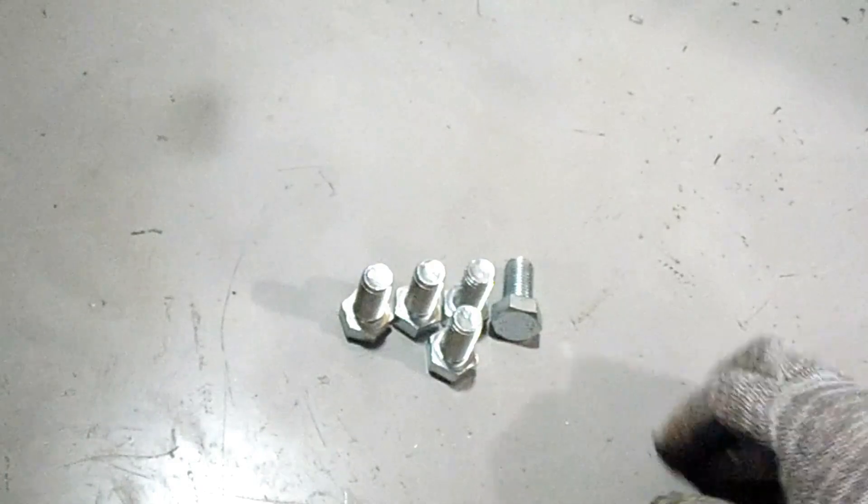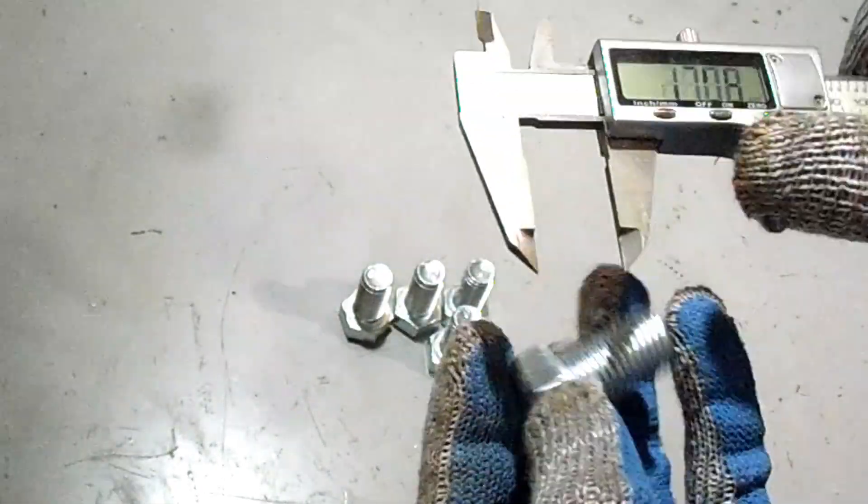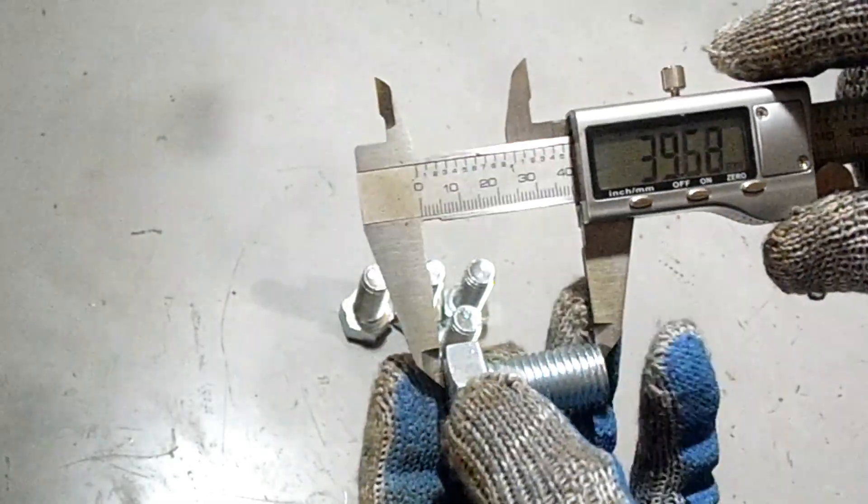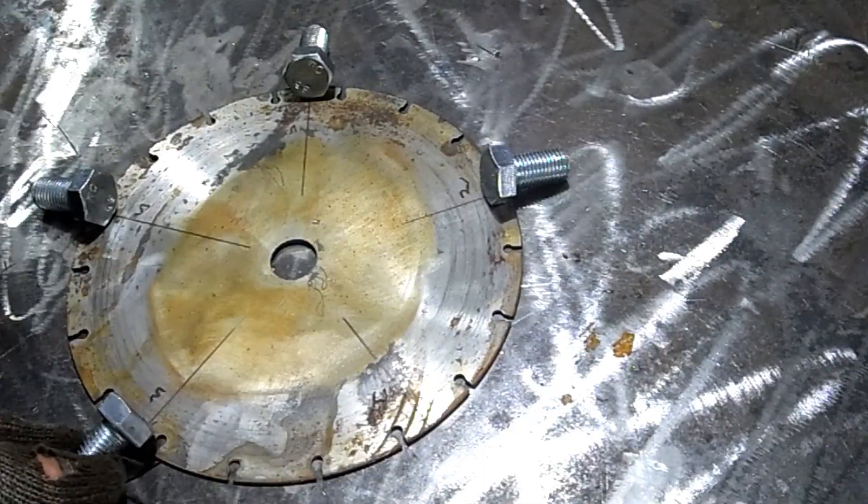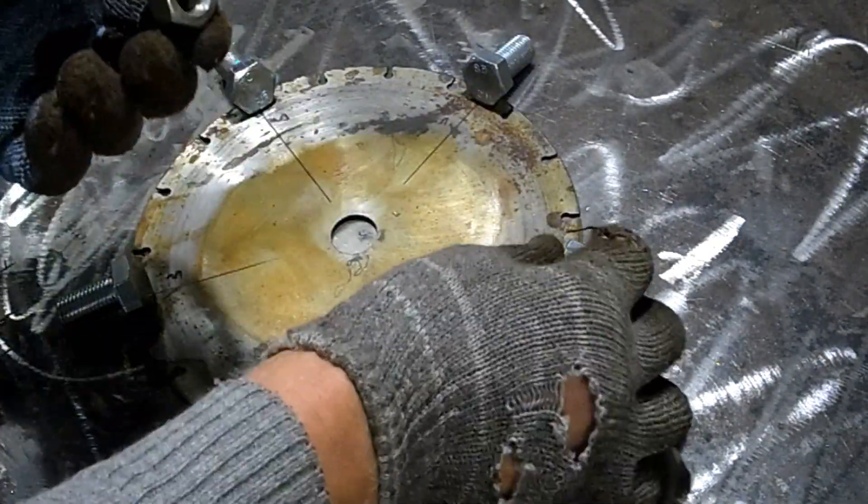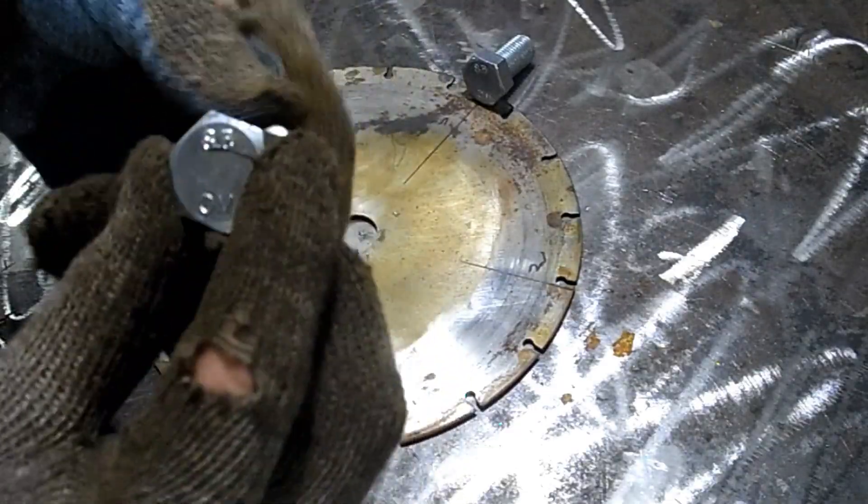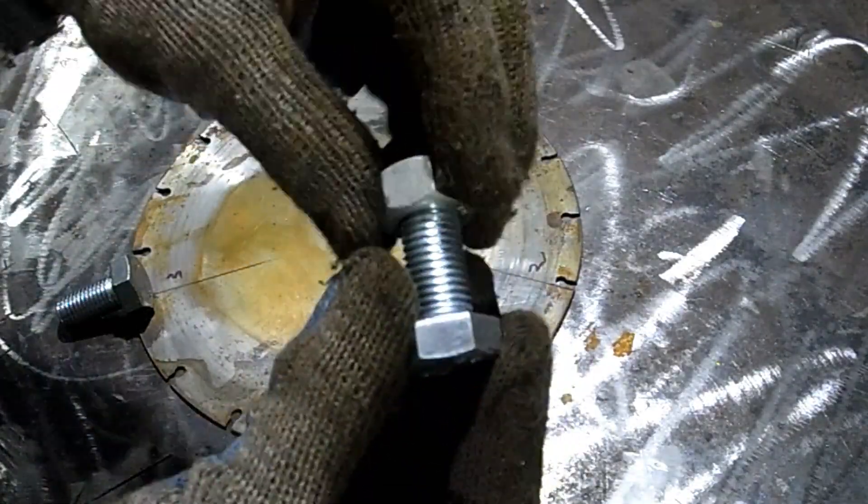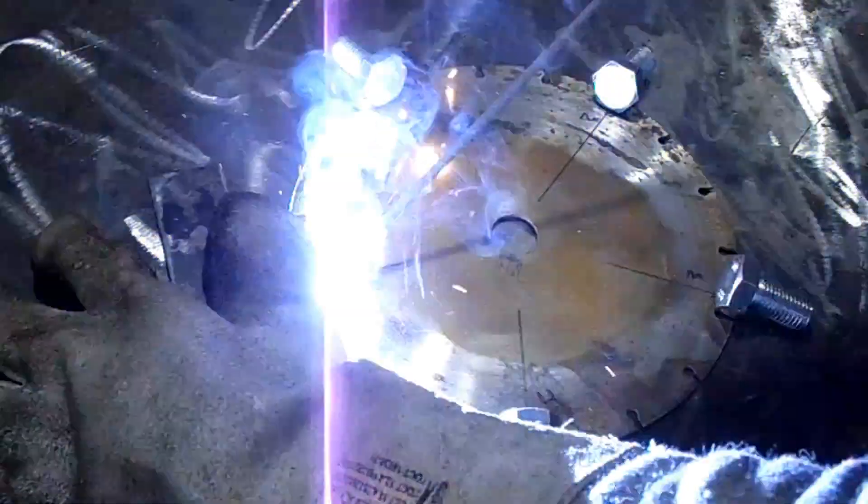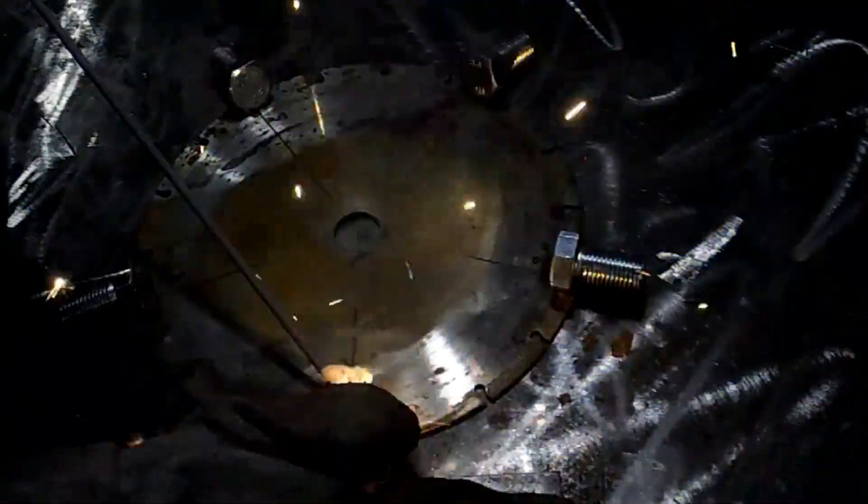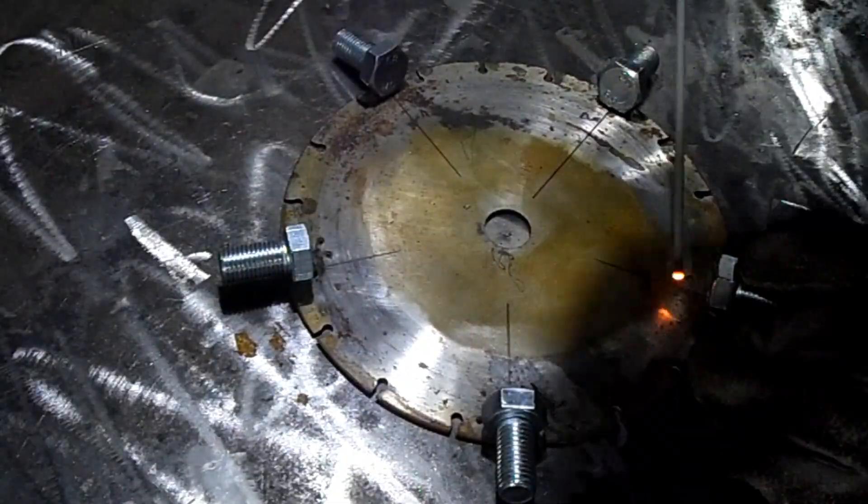For further work I will need 5 bolts with a diameter of 16mm. I arrange the bolts so that the center falls on the center of the bolt so that the bolts stand evenly. I screw on the nut one by one and weld the bolts to the disc. I welded all the bolts tightly. Finally, I don't want anything to fall off at the most crucial moment.